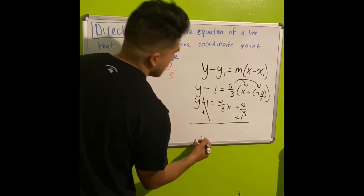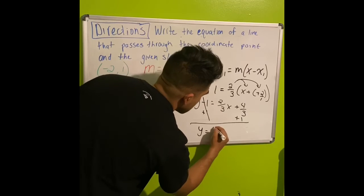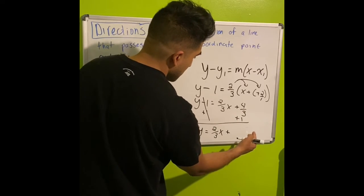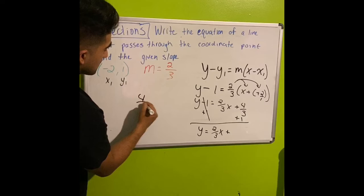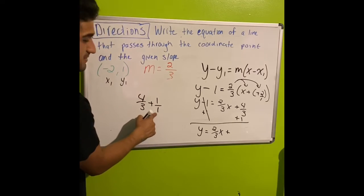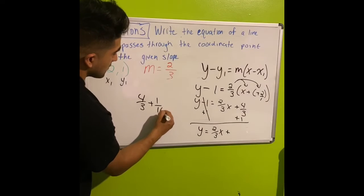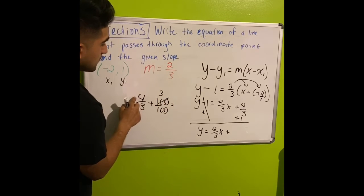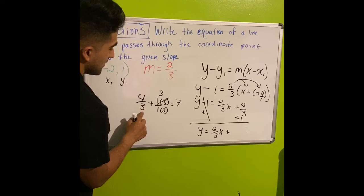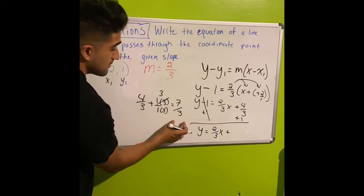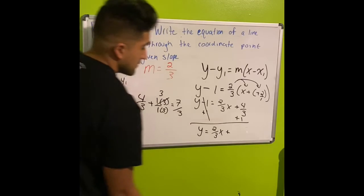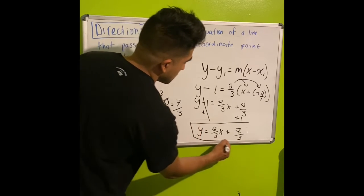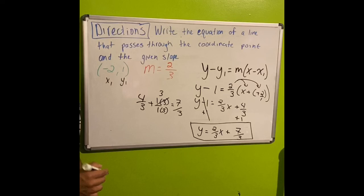Adding 1 to both sides, the minus 1 cancels, giving y equals 2/3 x plus 4/3 plus 1. To add 4/3 plus 1, convert 1 to 3/3, so 4 plus 3 equals 7, and since the denominators are both 3, the result is 7/3. Our final equation is y equals 2/3 x plus 7/3.